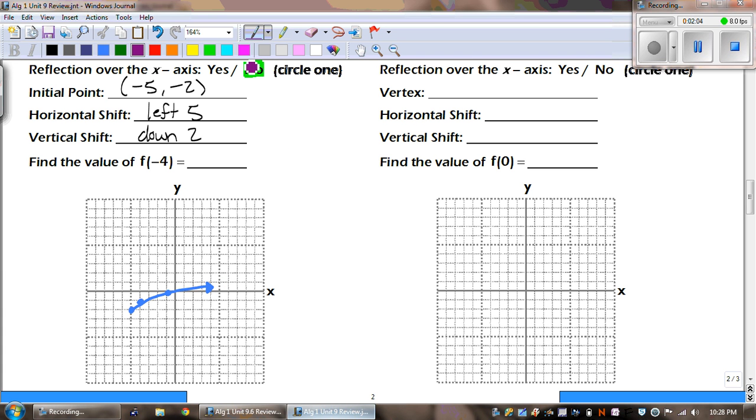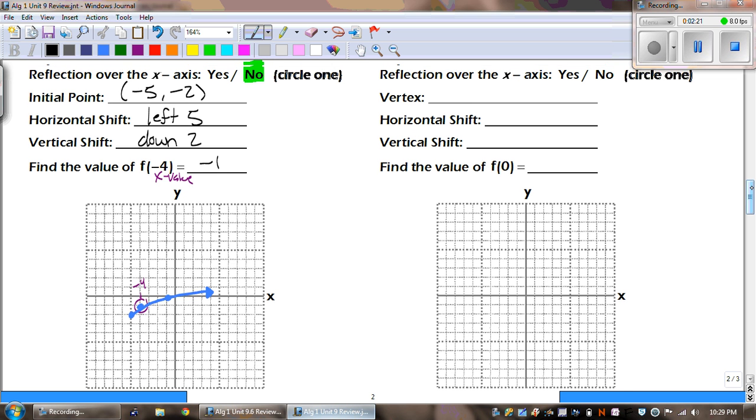So, find the value of f of negative 4. Remember that this is talking about our x value. So, when we have negative 4, what's our answer? Yep, negative 1.